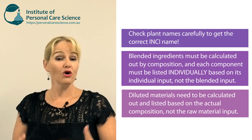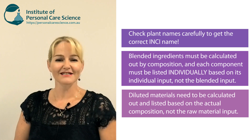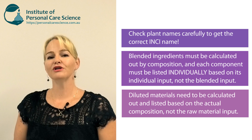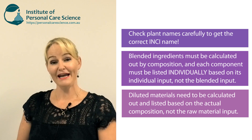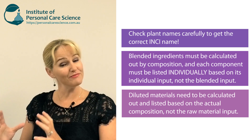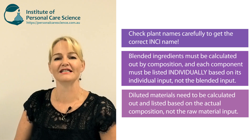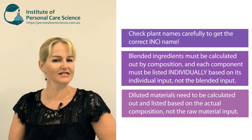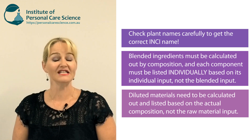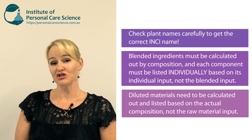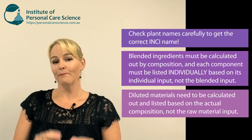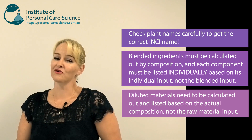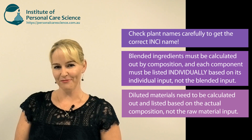So you would list water to cover the 7% portion, you would list cocamidopropyl betaine at the 3% point of the ingredient list, and of course there's probably a very small input of some preservatives — they need to be listed below the 1% point and they can of course then be in any order.